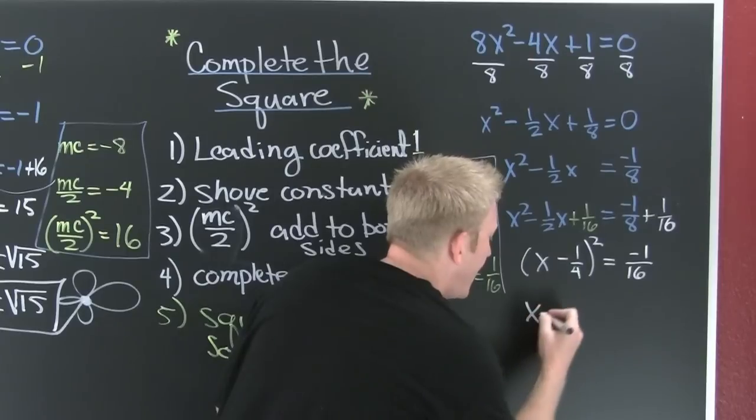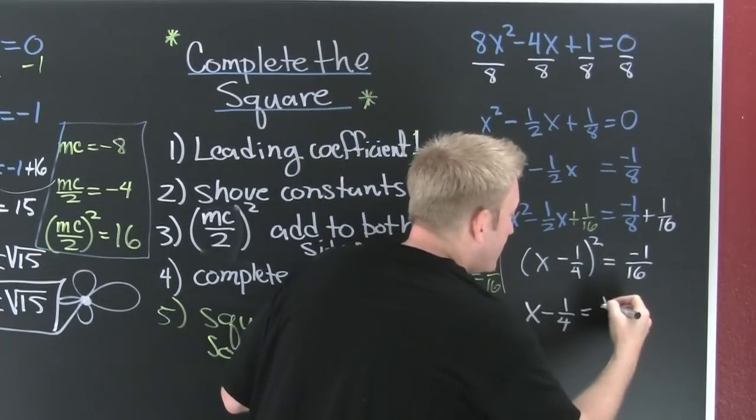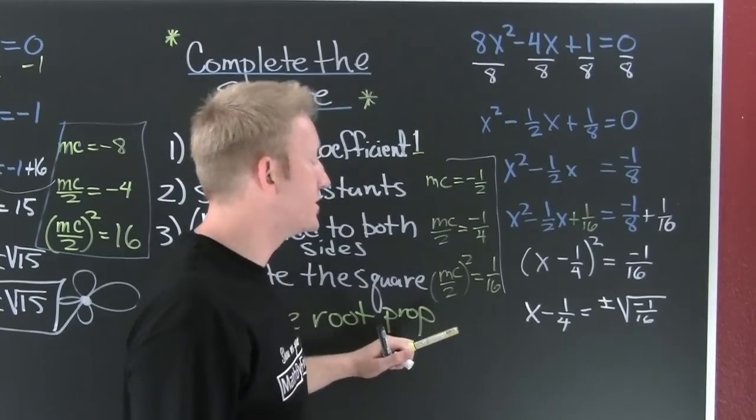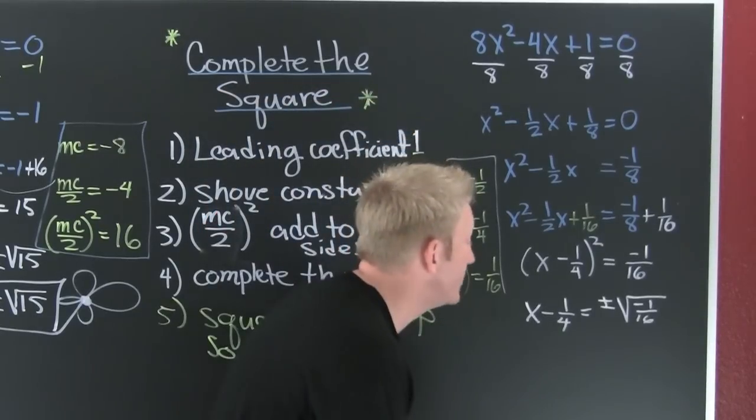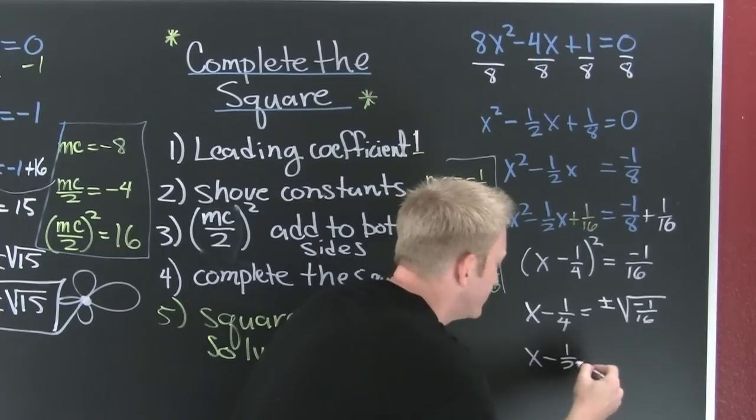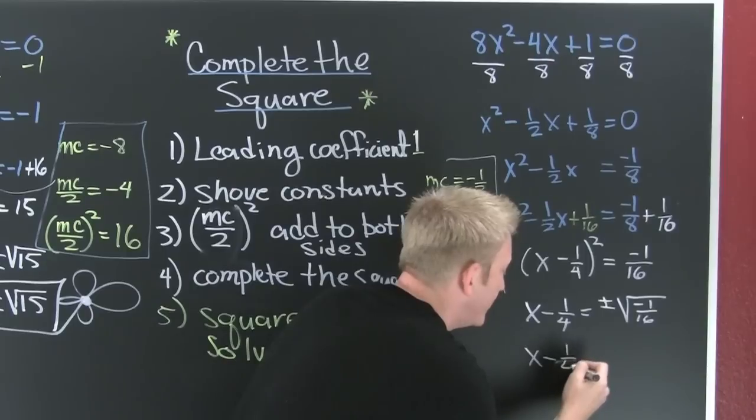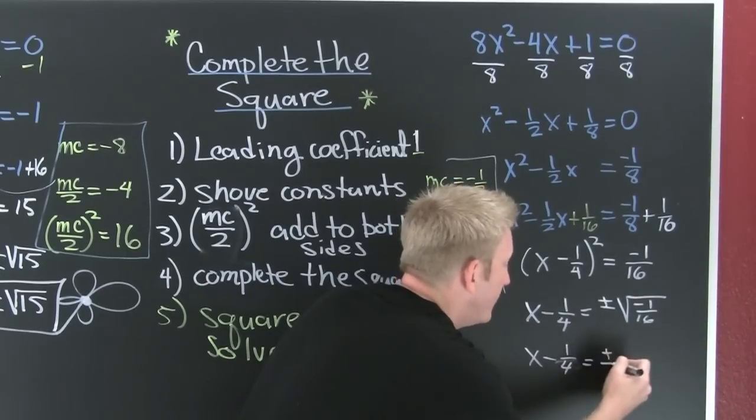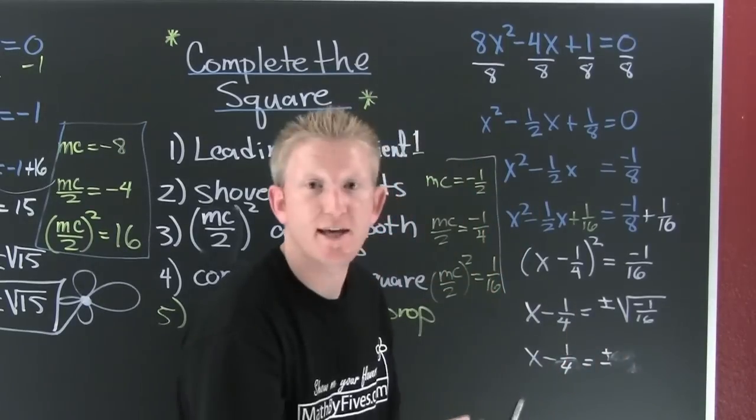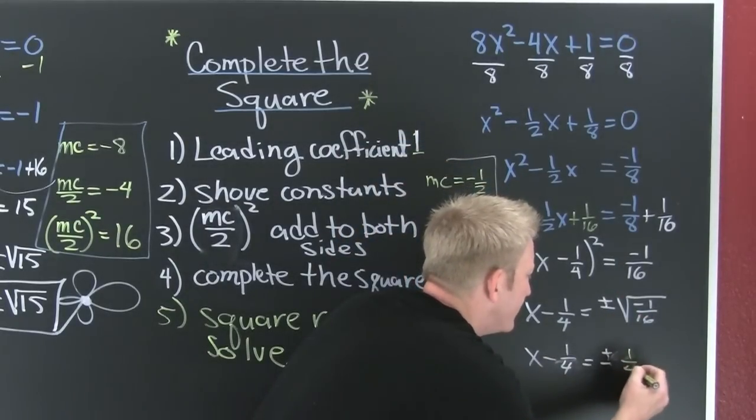All right. I'm almost done. I'm using the square root property and solving. Get it. Get it. X minus 1 fourth. Whenever I use the square root property, I'm not going to forget that. Plus or minus square root minus 1 sixteenth. Now I'm taking the square root of a fraction. That just so happens to be the root of the numerator divided by the root of the denominator. Because the root of a quotient is the quotient of the roots. That's a 4. And then this is going to be plus or minus. Let's get rid of that square root. Let's get rid of this marker. Keeps making mistakes. Yes. This one will be better. This is 1 over 4i.